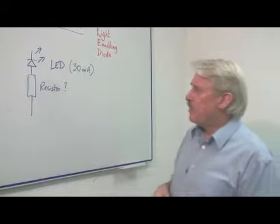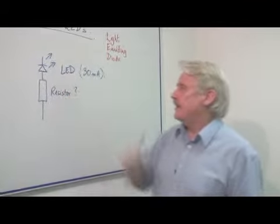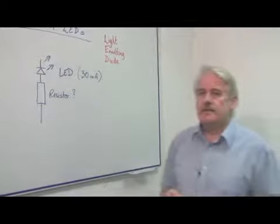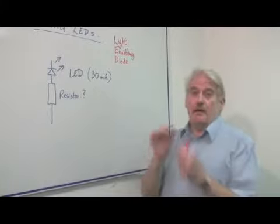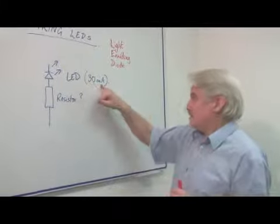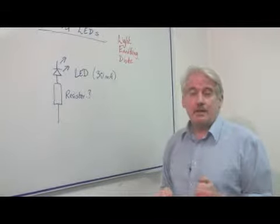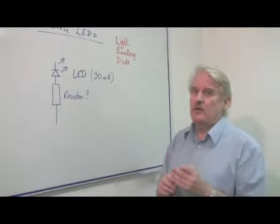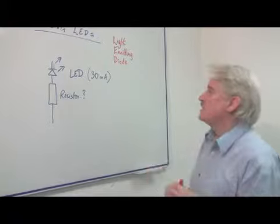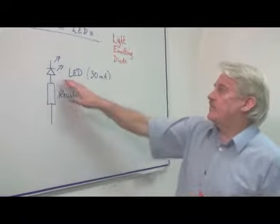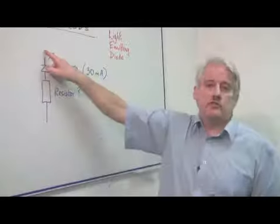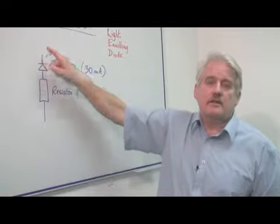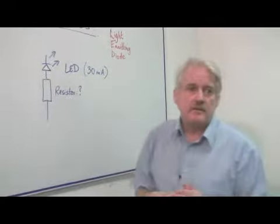But the one problem about an LED, light emitting diode, is that it is a current driven device. There are different ratings but usually an LED will take something like 30 milliamps, a very small current. So this very small current traveling through this light emitting diode causes it to give out light, and of course that light can be different colors.